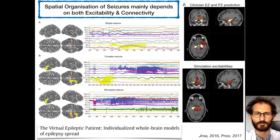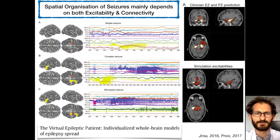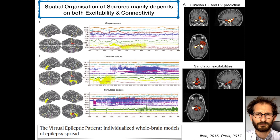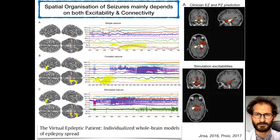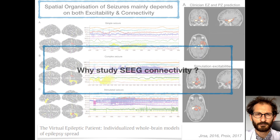To summarize, there are a lot of connectivity changes in epilepsy, both between and during seizures, in structural and functional connectivity, shown using MRI and electrophysiological recording. It is a conceptually important point that the spatial organization of seizures mainly depends on both excitability and connectivity, leading to work on virtual epileptic patients based on patient-based connectivity and simulation using computational models.